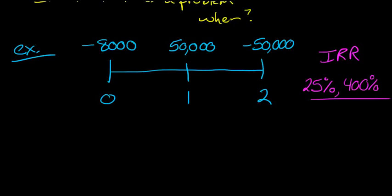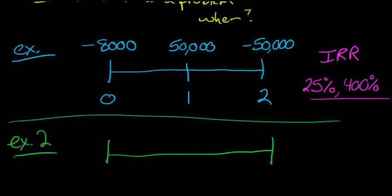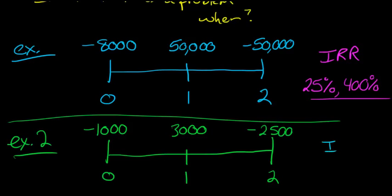Another issue, let's look at a different project here. We'll call this example two. So now we've got a cash outflow of $1,000 in period zero up front, and then we have a cash inflow of $3,000 at the end of period one, and then we have a cash outflow of $2,500 at the end of year two. So what's an issue here? Well, an issue here is that we actually do not have an IRR for this. What does that mean?